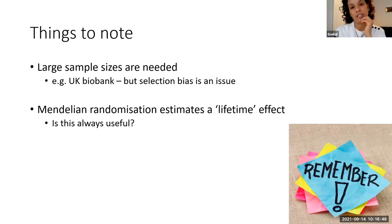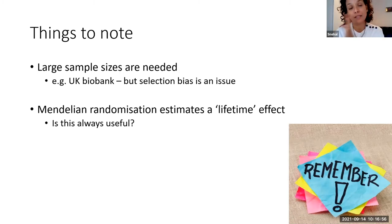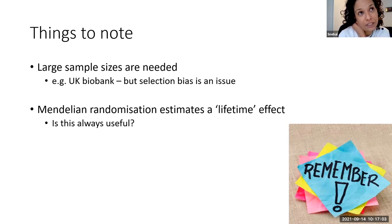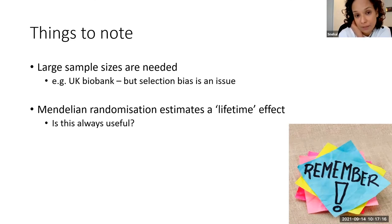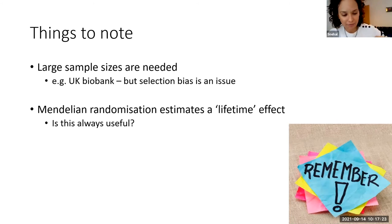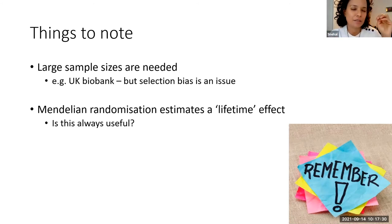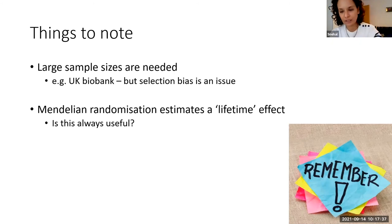Mendelian randomization estimates a lifetime effect — for our question we'd be getting the lifetime effect of BMI on strength. In some instances that's useful, for example looking at the relationship between chronic low-grade inflammation and heart disease. But for life course epidemiologists interested in whether BMI gain at specific periods in life is particularly detrimental for subsequent health, Mendelian randomization is probably not that useful when thinking about critical periods of life.